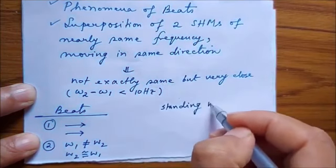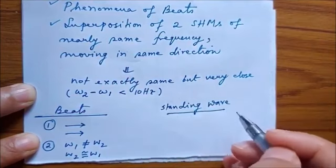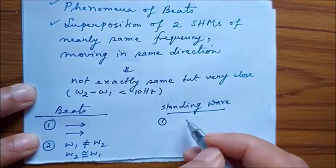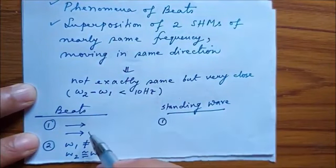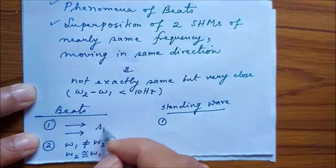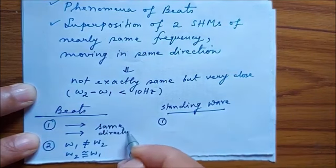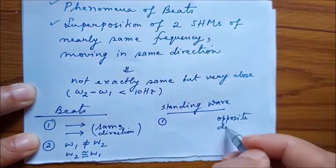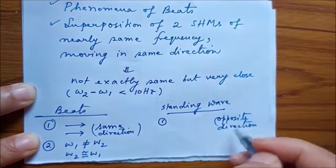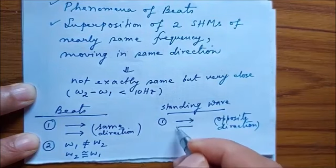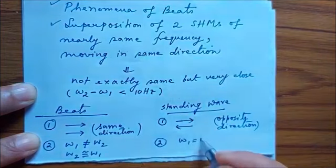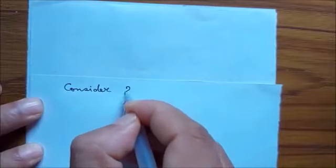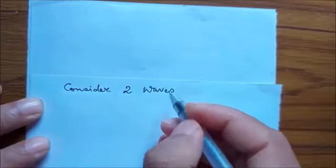There is another phenomenon referred to as the creation of a standing wave. The conditions differ here: firstly, to produce a standing wave, the two waves should move not in the same direction but in the opposite direction. Secondly, their frequencies should be the same.